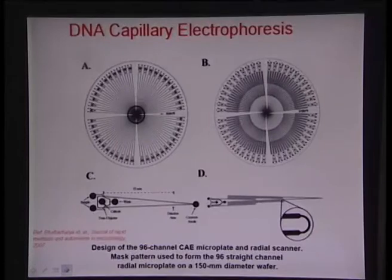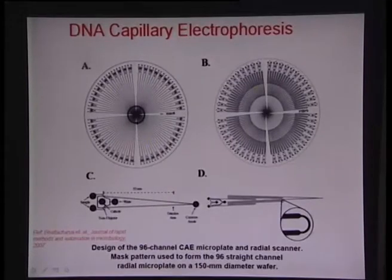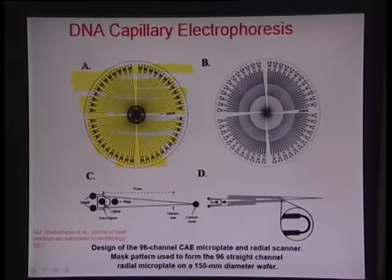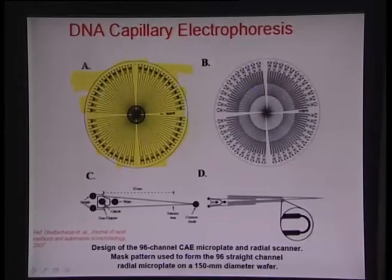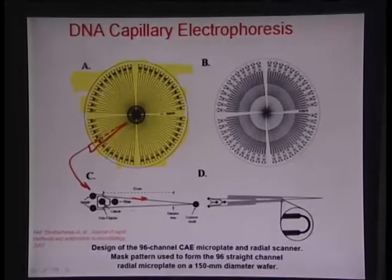Another fantastic example is from a paper published in the early 2000s by the Mathies group at UC Berkeley. Essentially what the Mathies group is trying to show is a set of capillary arrays - instead of one capillary, many capillaries arranged on a radial plate like a CD. Looking at one of the channels, you have two independent channels converging into a port at the center which has a common anode.